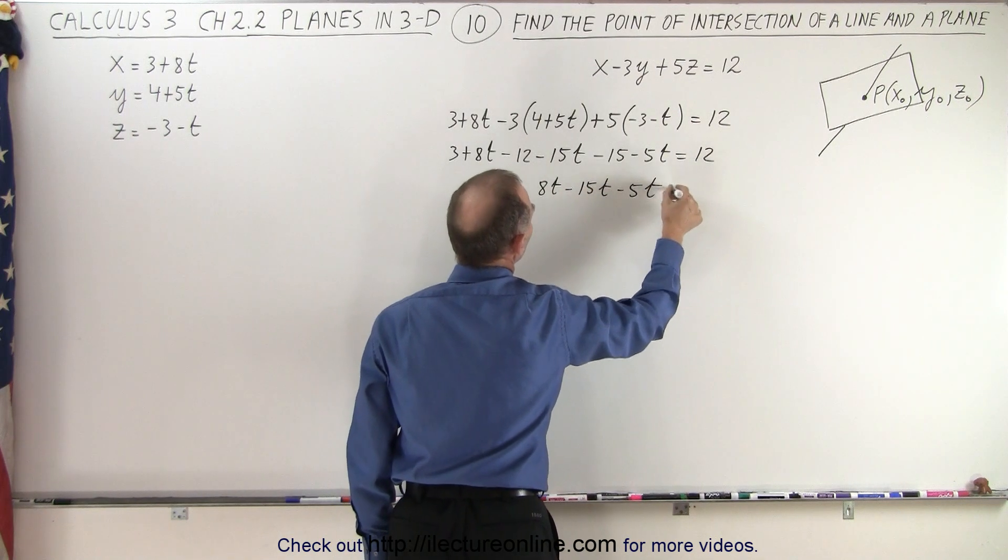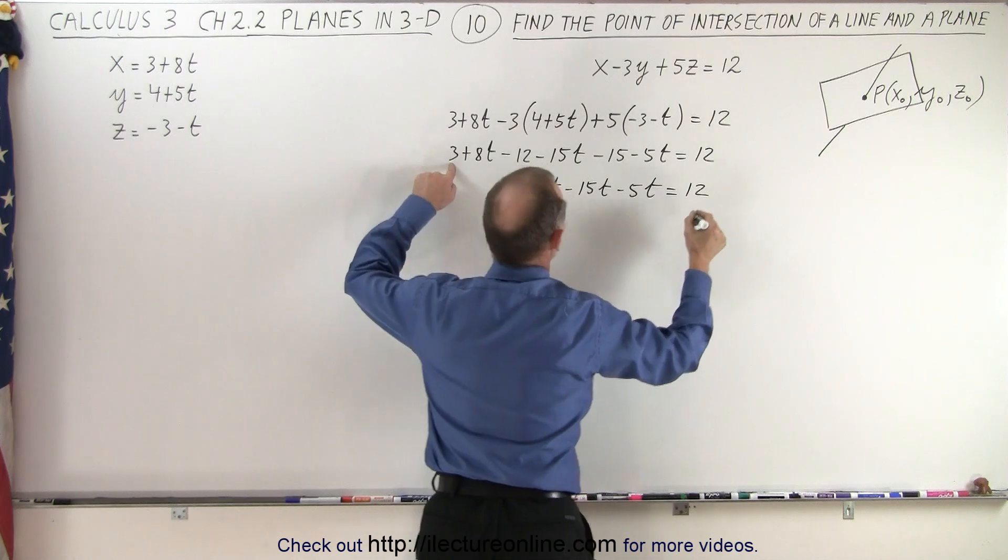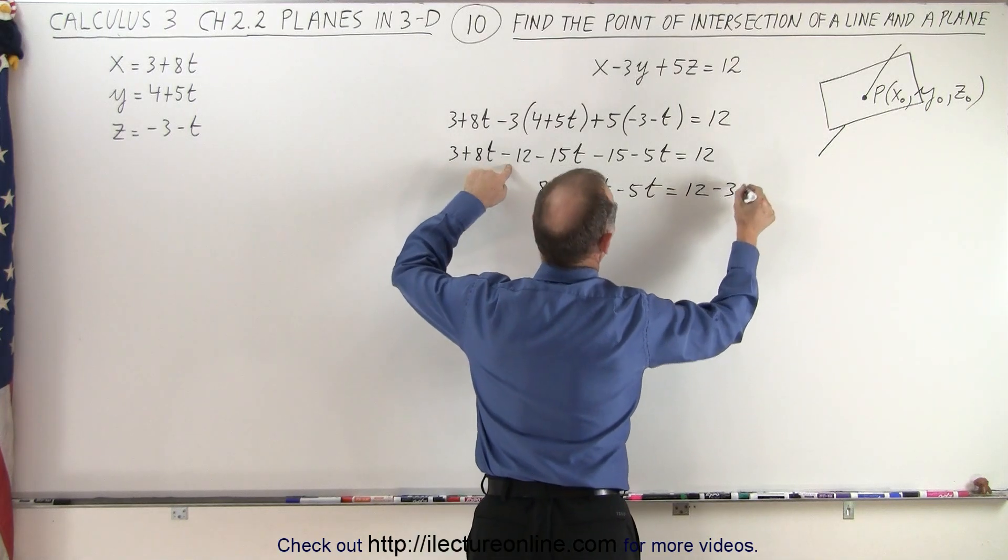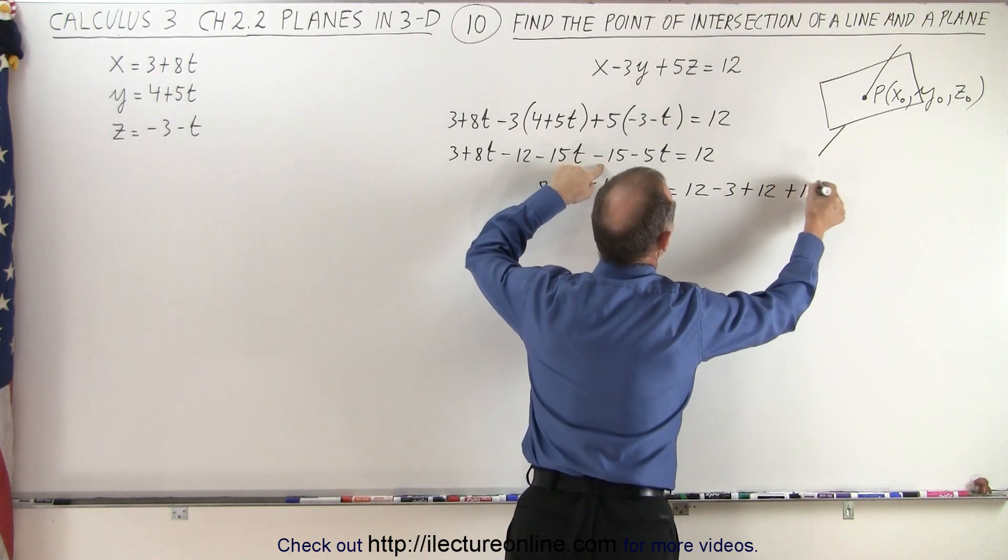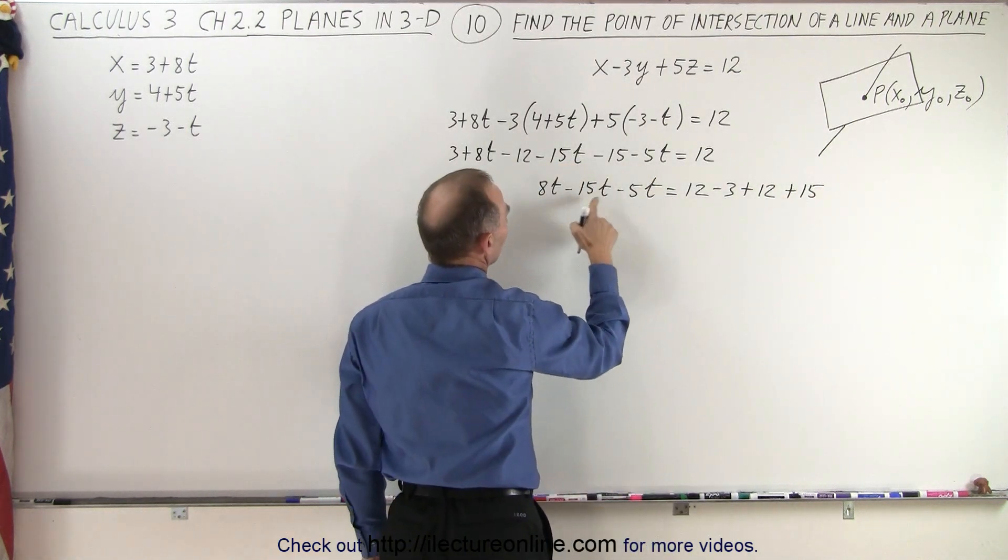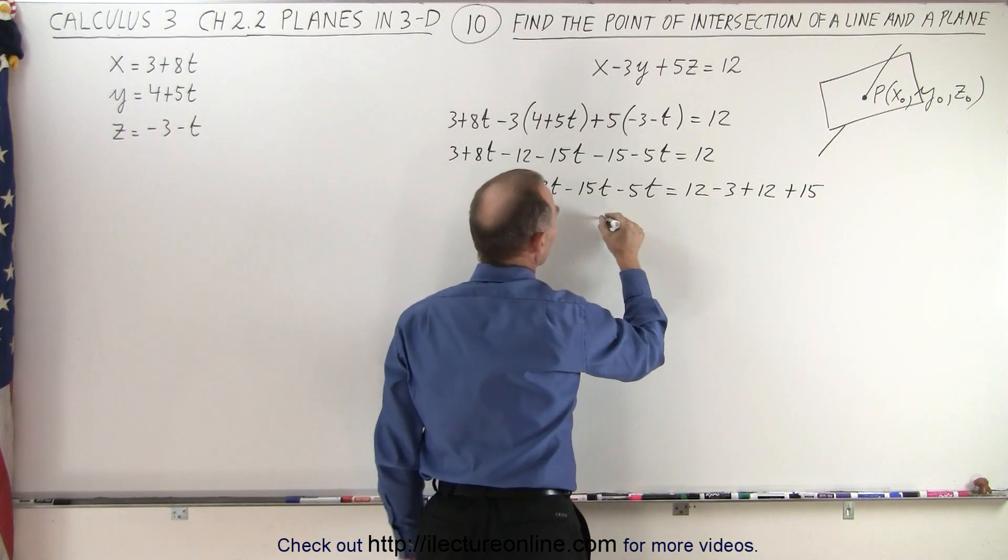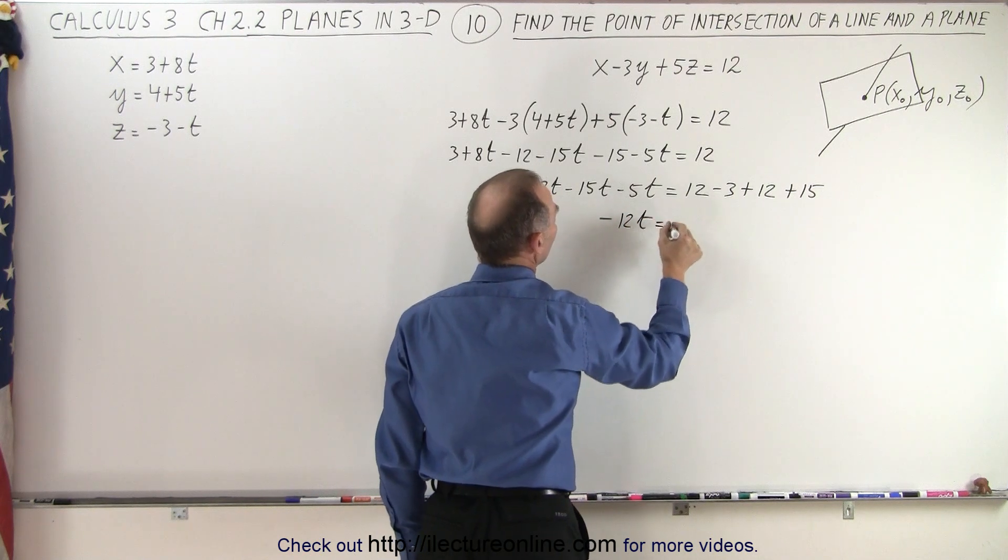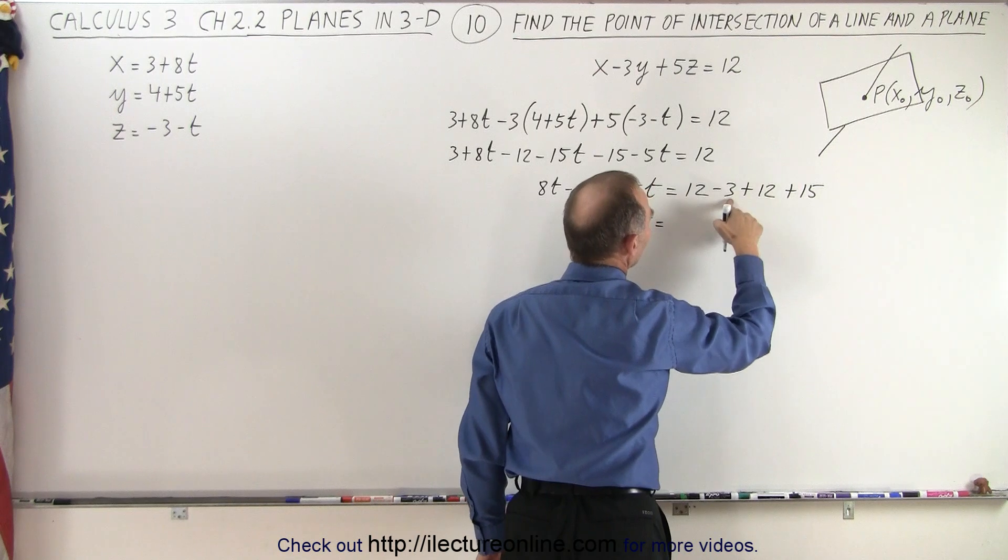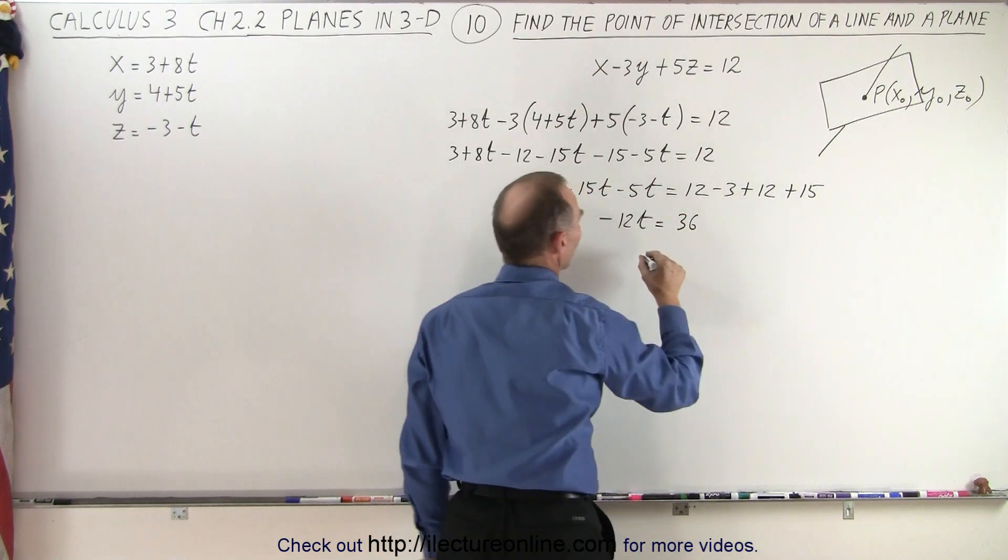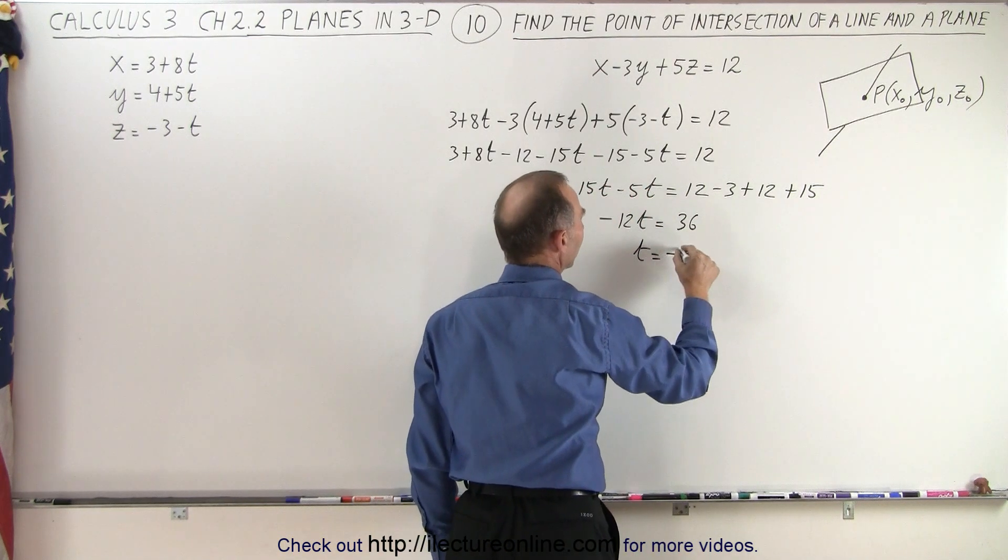So that gives us minus 12t is equal to 36, which means that t is equal to minus 3.